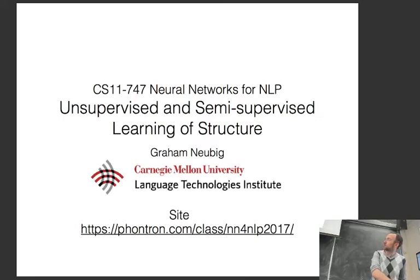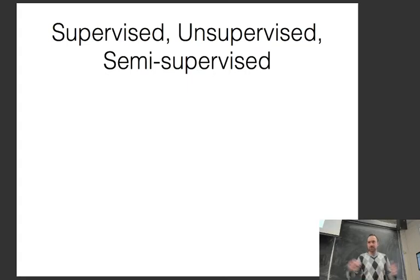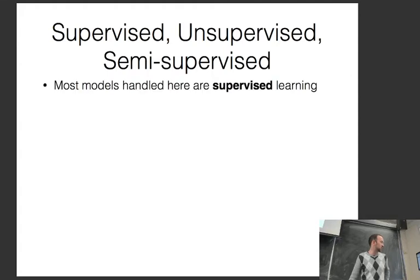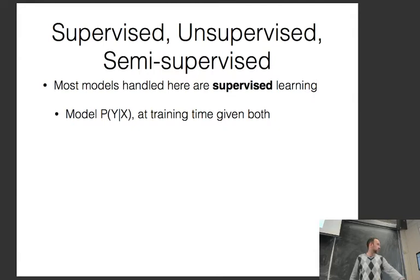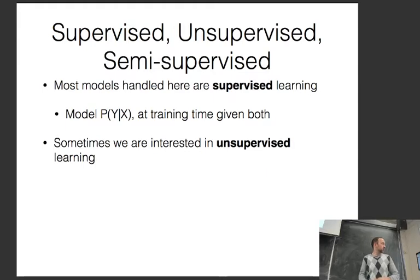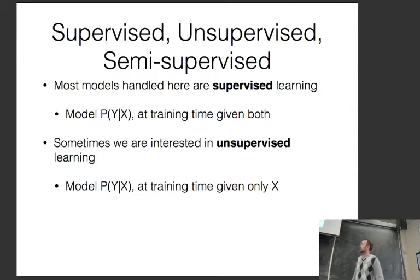This talk covers unsupervised and semi-supervised learning of structure. Most models handled so far use supervised learning, where we model the probability of Y given X and at training time we're given both. In unsupervised learning, we want to model P(Y|X) but at training time we're only given X.